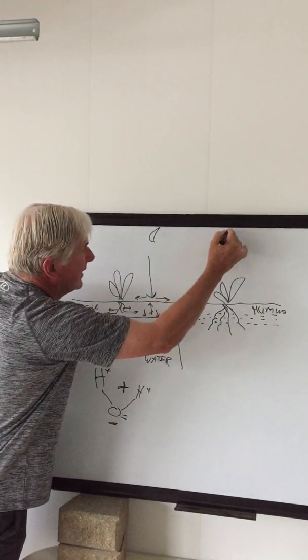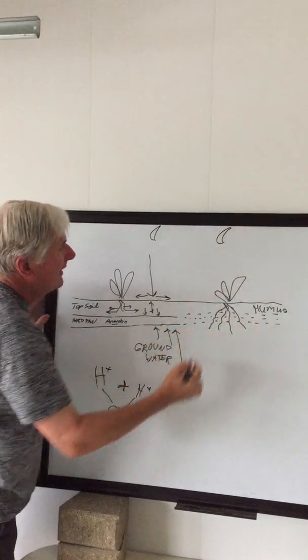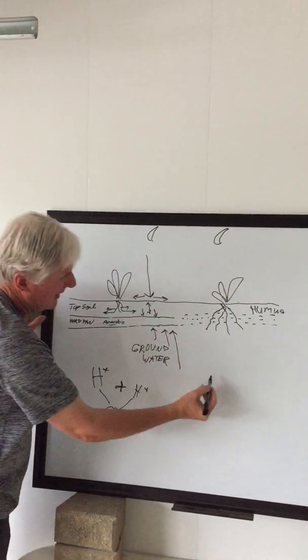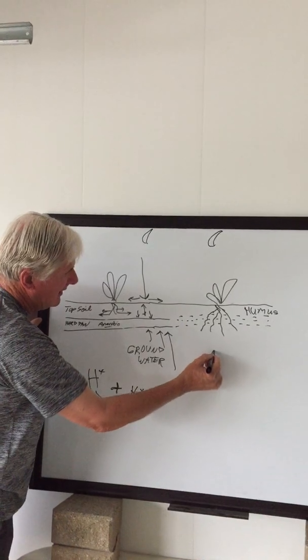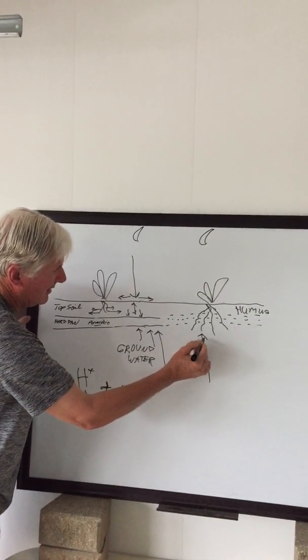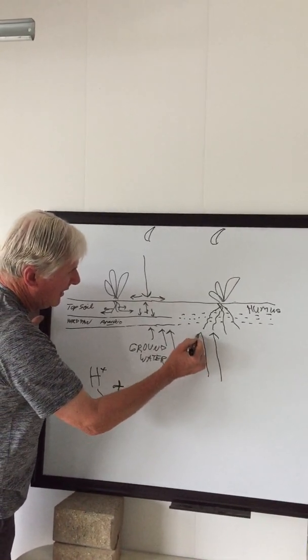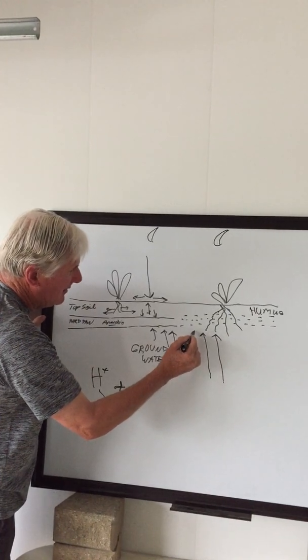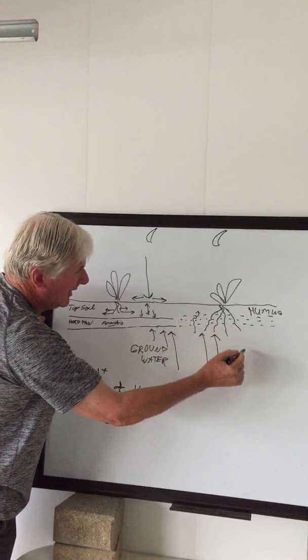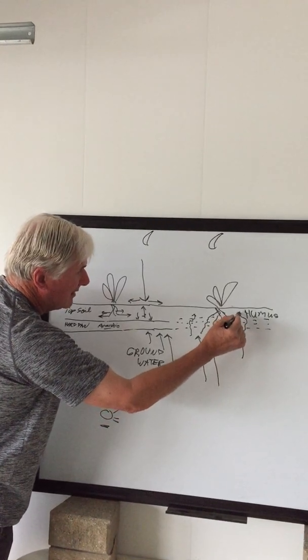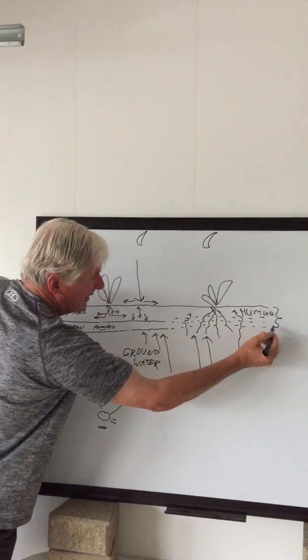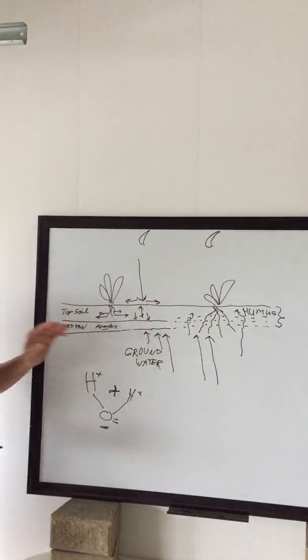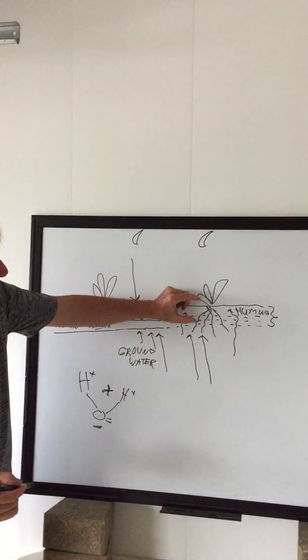So here's what happens in a biologically active soil. At night when the moon is up in the air, the ground water is attracted and it moves by this gravitational traction. But it moves not only up to where the hardpan used to be, it moves through this hardpan layer and up into this humus layer.